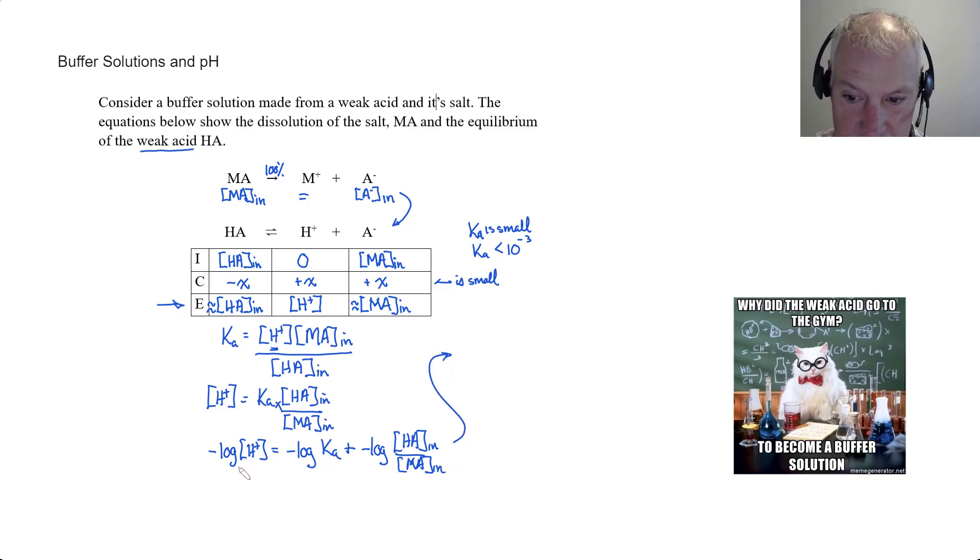Some of you might recognize that the negative log of the hydrogen ion is the pH, and the negative log of Ka is the pKa. And I'm now going to add to that a negative log of this, which essentially is the log of my salt concentration over the acid concentration. This is called the Henderson-Hasselbalch equation, and it looks like this.